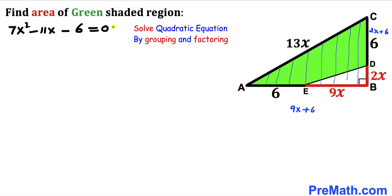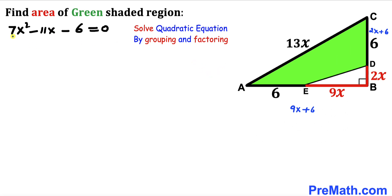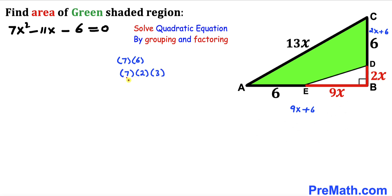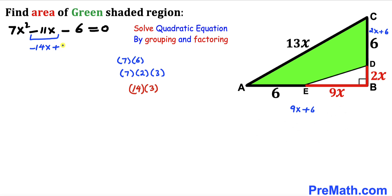We will solve this quadratic by grouping and factoring — you may also use the quadratic formula. Multiplying 7 times 6 gives 42, which factors as 14 times 3, and the difference of these two numbers gives us 11. So we rewrite the middle term as -14x + 3x.